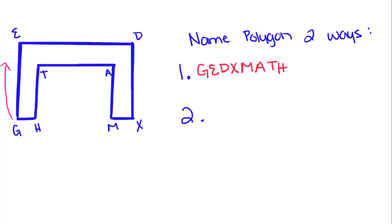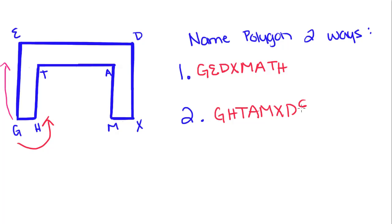Or we can go the other way, starting with G: H, T, A, M, X, D, E. So those are two ways to name that polygon. And you can name a polygon starting with any point — I can start with D, or I can start with M. It doesn't matter.